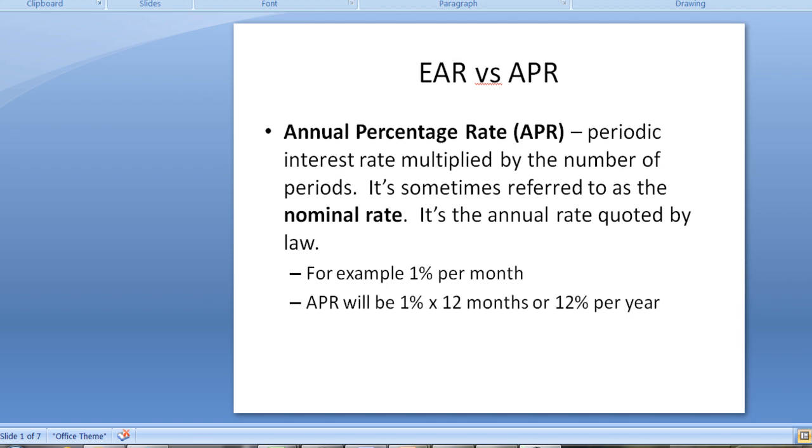So if you open up your credit card statement, you'll see what the APR is. Sometimes if you listen on the radio when you hear about these great deals to buy a car, they will, with the really fast talking person at the end, mention what the APR is on the car loan. So for example, if you have a loan that is 1% per month, then the APR is going to be 1% times 12 months, or 12%.